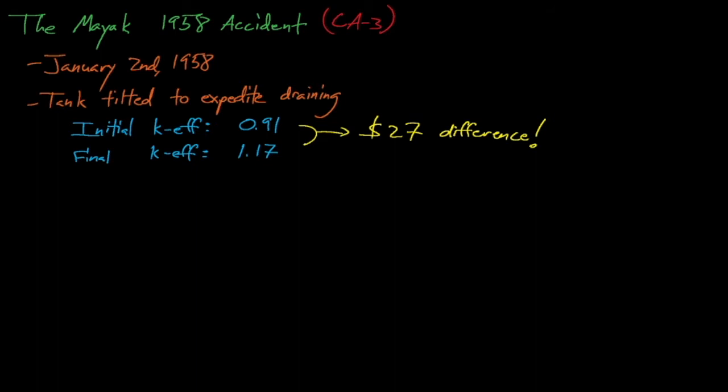For reference, the ACRR trigger reactor at Sandia can insert at most somewhere between $3 and $5 worth of reactivity. This system was absurdly supercritical during the accident.